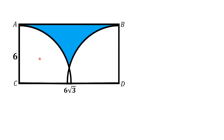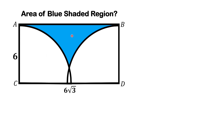Hello everyone. In this video we are given a rectangle ABCD with its length equal to 6√3 units and width equal to 6 units. Two identical quarter circles are inserted inside this rectangle such that the radius of each quarter circle is the width of this rectangle, meaning the radius of each quarter circle is 6 units. We have to find the area of this blue shaded region inscribed between the quarter circles and one side of the rectangle.